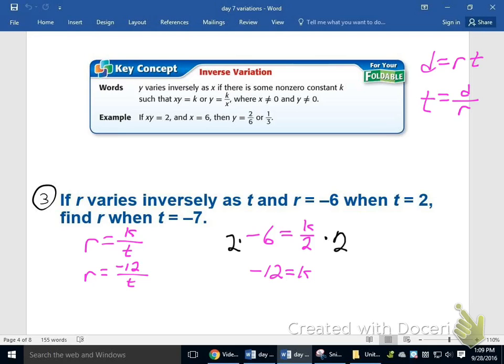Now I'm ready to roll with the problem. It says find r when t is negative 7. So I've just got to put that negative 7 in for t. And the only thing I can do to simplify that is just cancel the negatives. So 12 sevenths is my final answer.